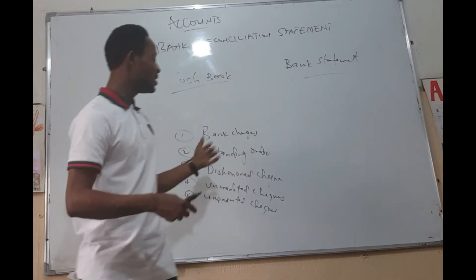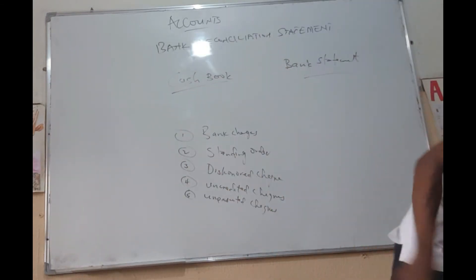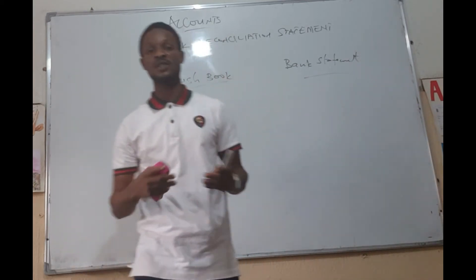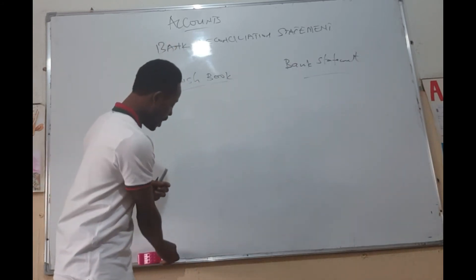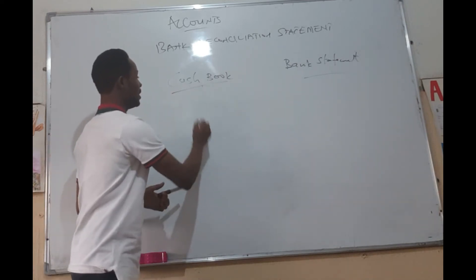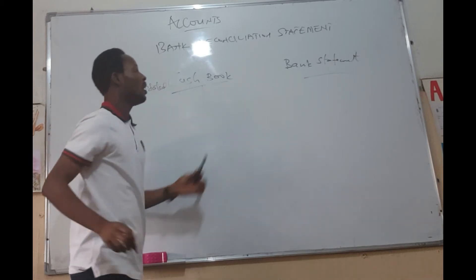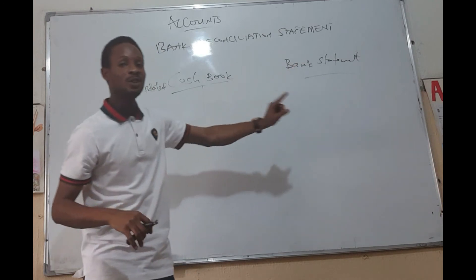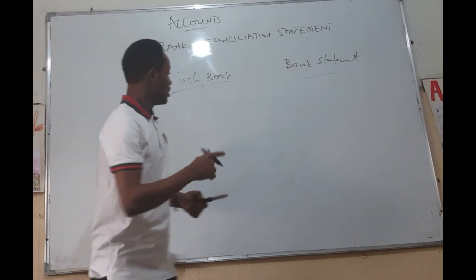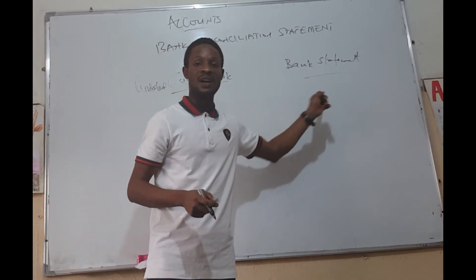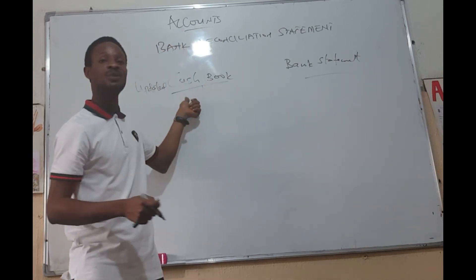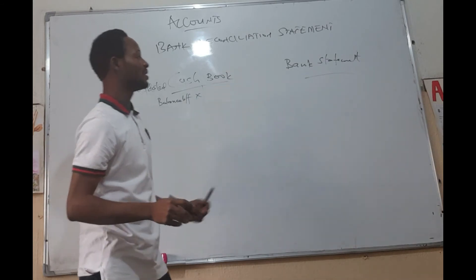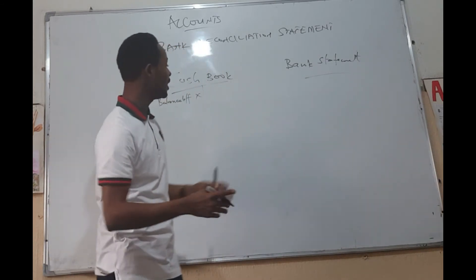Now, how do you reconcile the differences? There are two steps to reconcile the differences between cash book balance and bank statement balance. Step one is to adjust or update the cash book. Cash book updating is done by looking at items that appear in the bank statement but are not yet in the cash book — for example, bank charges. Bank charges would normally appear in the bank statement but not yet in the cash book until you prepare the updated cash book. Bank charges is money going out of the business account, so it has to be on the right-hand side — the credit side.